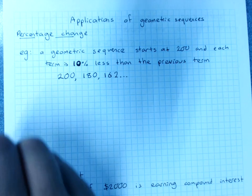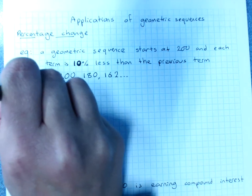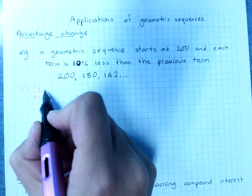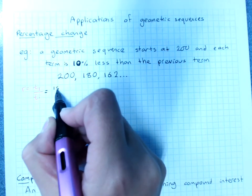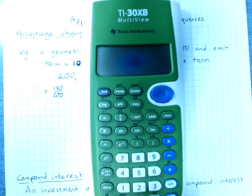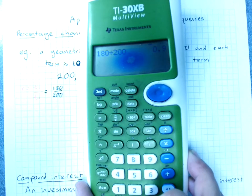If we check the common ratio, remember our common ratio is T2 over T1. So 180 over 200. Let's just check that. 0.9.